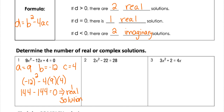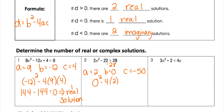This next one also needs to be set equal to zero, so I subtract 28. In this case, a is 2, b is 0 because there is no x term, and c is negative 50 when combining negative 22 with negative 28. So b squared minus 4ac gives 0 squared minus 4 times 2 times negative 50, which simplifies to a discriminant of 400. That's a positive number, so there are two real solutions.